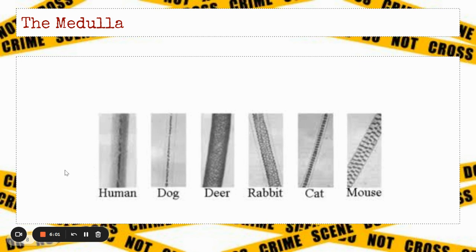Here are some examples of what we would see under a microscope of different medullas. The dog is a good example of fragmented. The deer is a good example of solid — it goes from edge to edge of the hair, the entire thing is pigmented. You can see that other organisms like a rabbit and a cat have all sorts of different patterns in the medulla. That is one way scientists can determine what organism a hair came from.